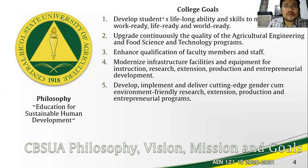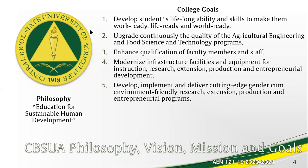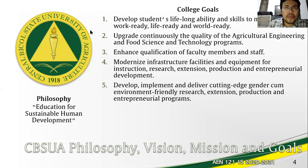Besides the university goals, we also have college goals. The College of Engineering and Food Science goals are: to develop students' lifelong ability and skills to make them work-, life-, and world-ready; to upgrade continuously the quality of the Agricultural Engineering and Food Science and Technology programs; to enhance qualifications of faculty members and staff; to modernize infrastructure facilities and equipment for instruction, research, extension, production, and entrepreneurial development; and to develop, implement, and deliver cutting-edge, gender-responsive, environment-friendly research, extension, production, and entrepreneurial programs.